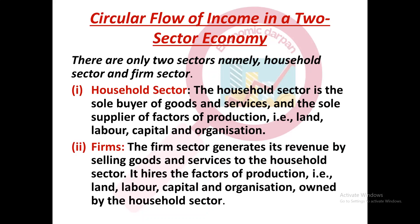The firm sector generates revenue or income when it sells goods and services to the household sector. It hires the factors of production — land, labor, capital and organization — owned by the household sector to produce those goods and services.